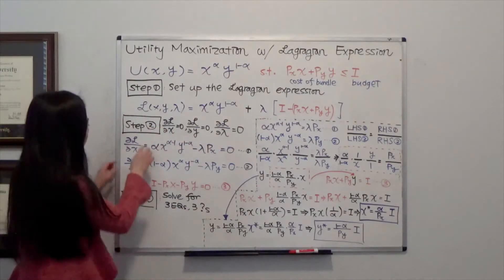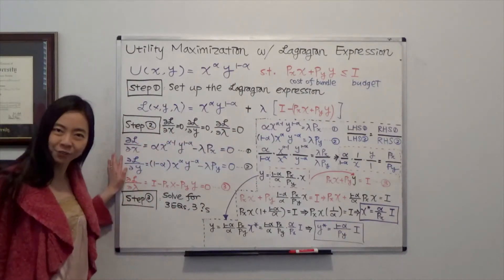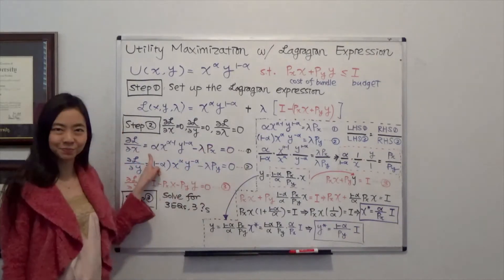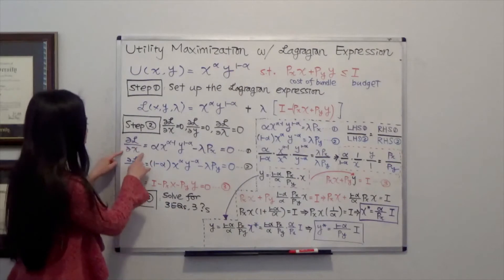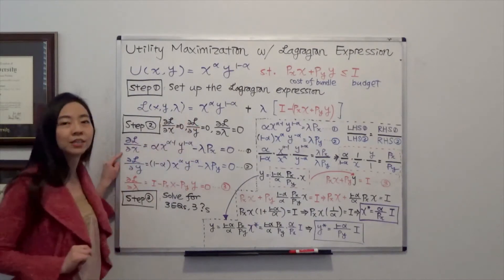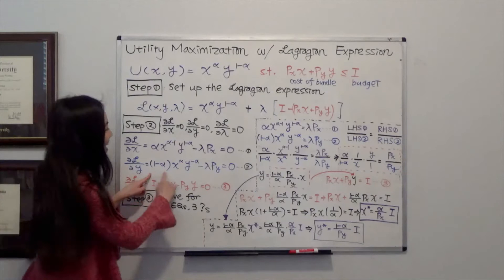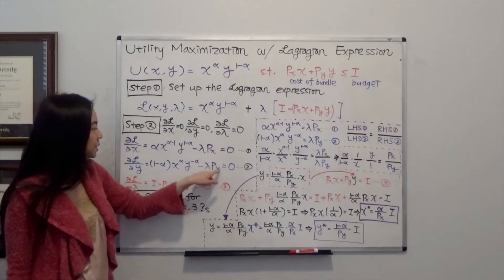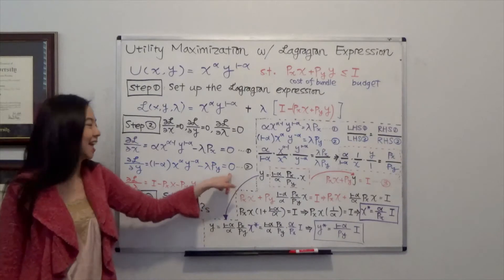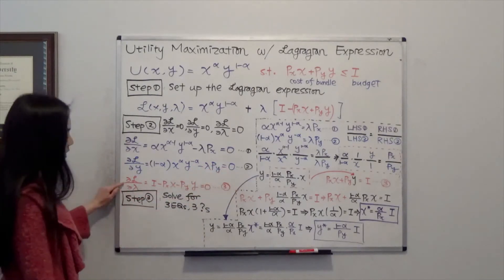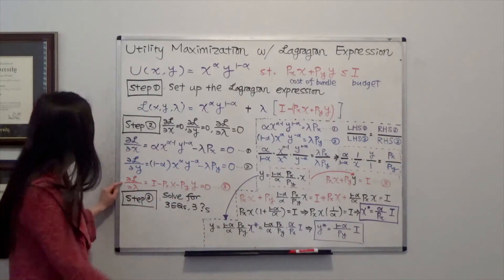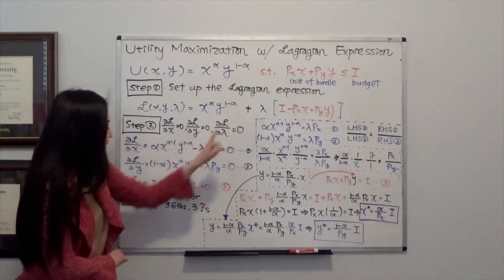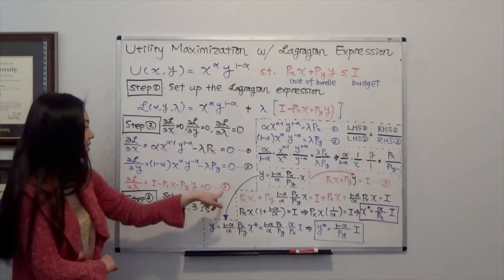When you take the partial derivative with respect to x, you get equation 1. Taking the partial derivative with respect to y gives equation 2. Note that I'm setting those equations equal to zero. Finally, taking the partial derivative of the Lagrangian with respect to lambda gives you the budget constraint — that's equation 3.